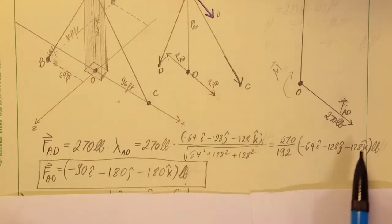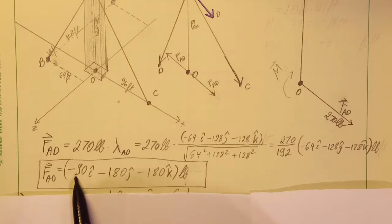We plug in, find our values, and we're gonna find our force to be right here in component form: negative 90i, negative 180j, negative 180k pounds.